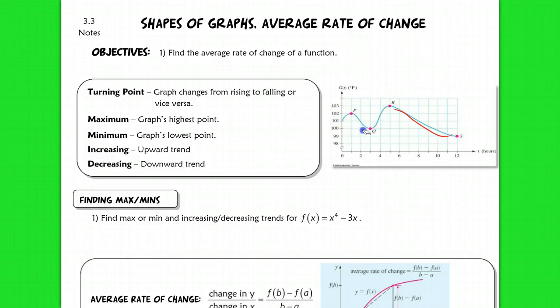This is supposed to be representative of someone's fever over a course of 12 hours, so a fever is going to rise and fall — that's what you're seeing here. And then we can find the average rate of change, which is going to relate to our later discussion. So real quick, I want to go through finding max and mins as well.